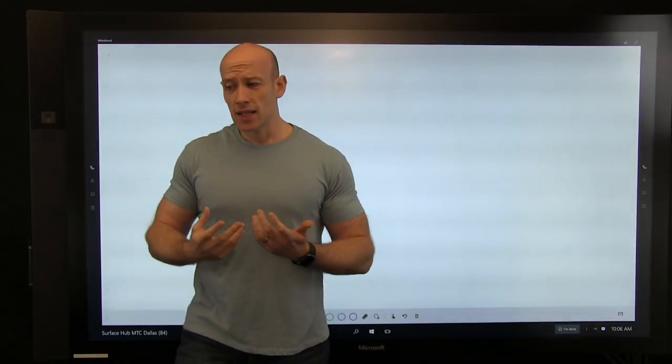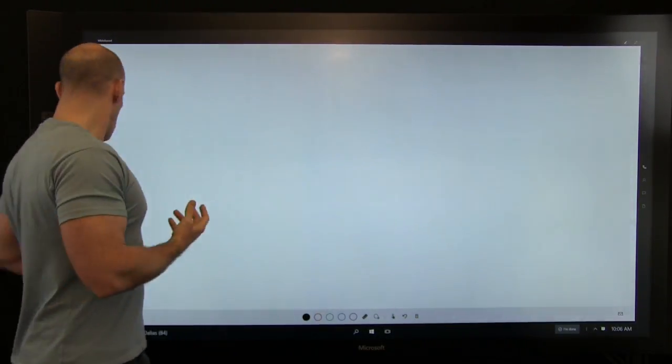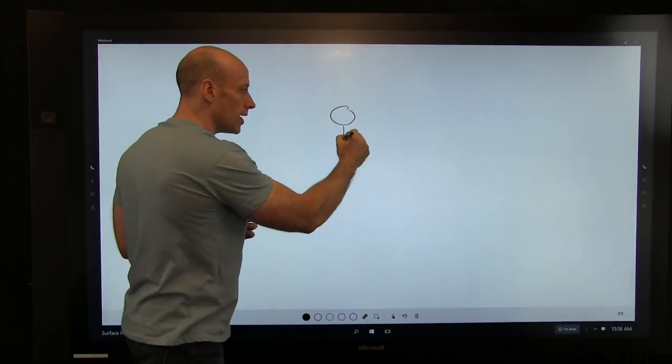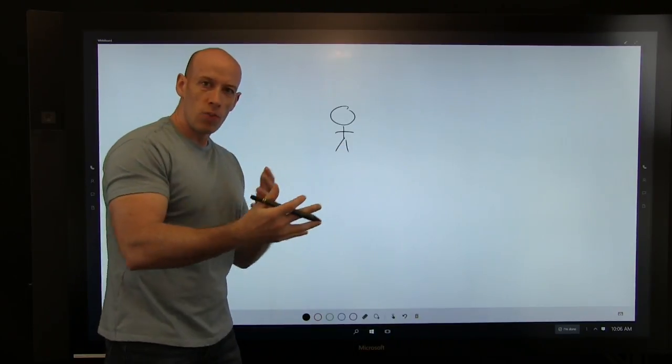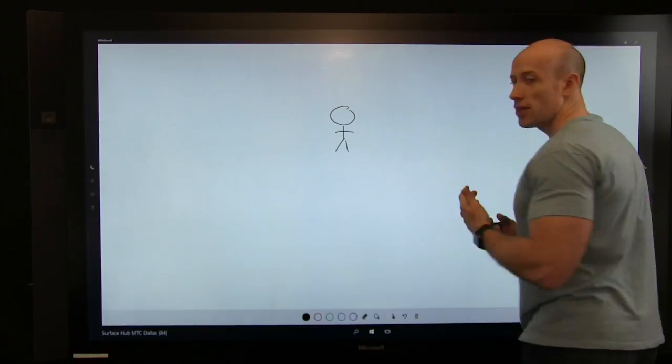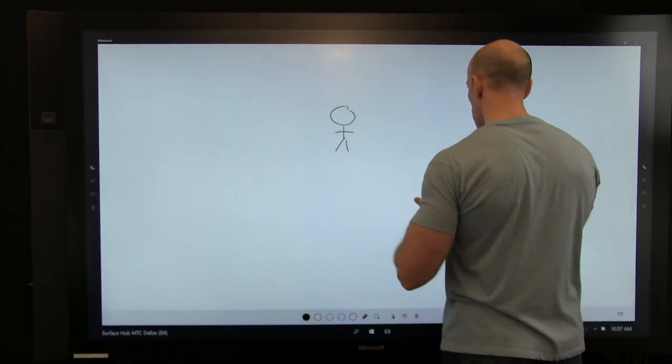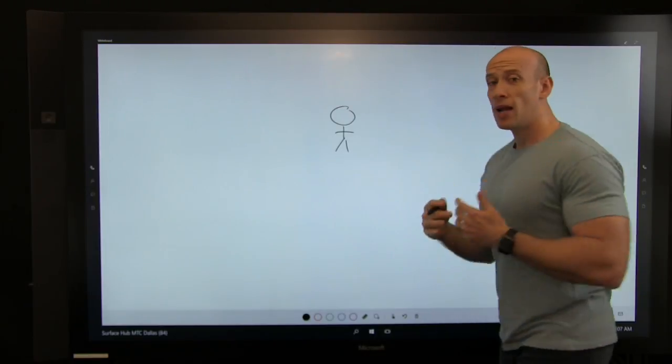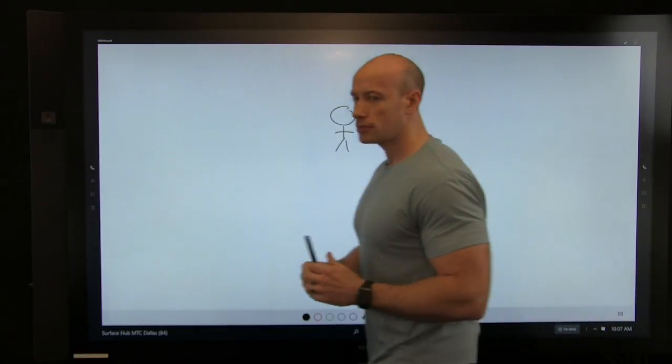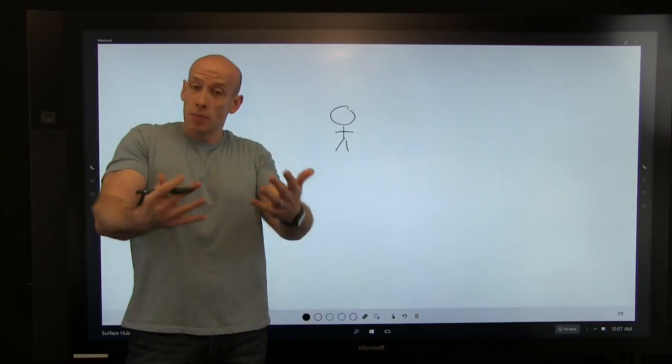If I'm right-handed, I'm going to stand on the right side of the screen. Because when we write, I can write like this. I can draw things, and I can still be talking to the camera very easily. If I was to stand on this side and write, I have to give you my full back every time I try to do something. So if I'm left-handed, I'm going to stand on the left side of the screen. Right-handed, stand on the right side of the screen. And again, I'm talking to people.